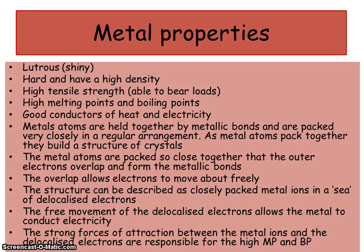Most elements are metals rather than non-metals. For example, copper and iron are metals. Copper is a good conductor of electricity and is used to make brass and electrical wiring. Iron is used to make steel, which is used to make cars and bridges because it's strong.